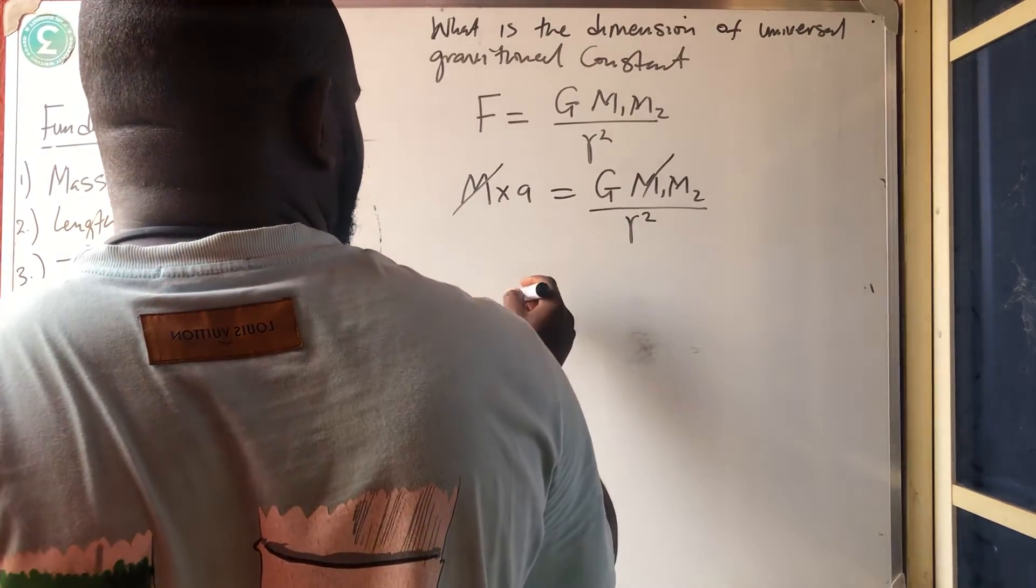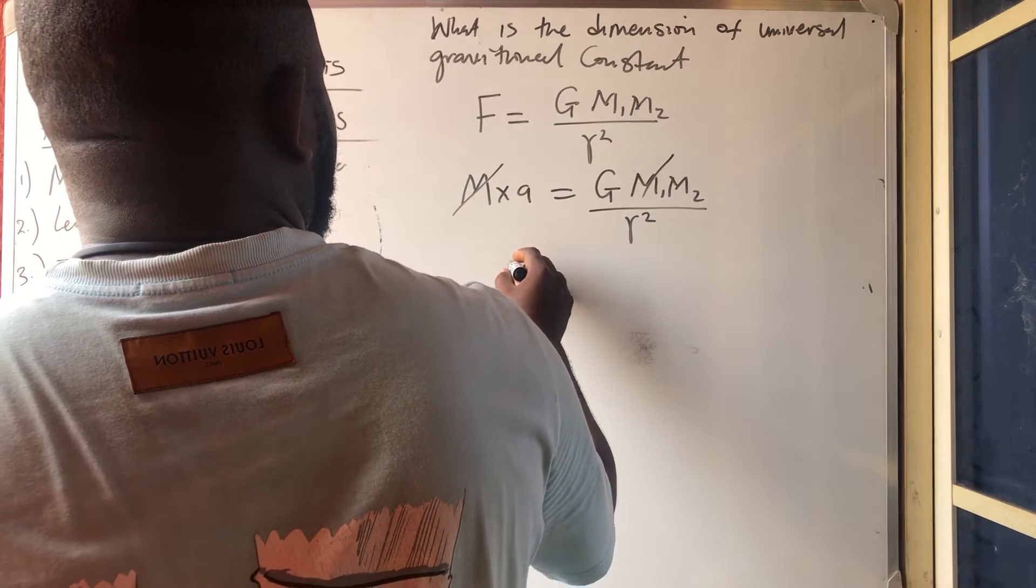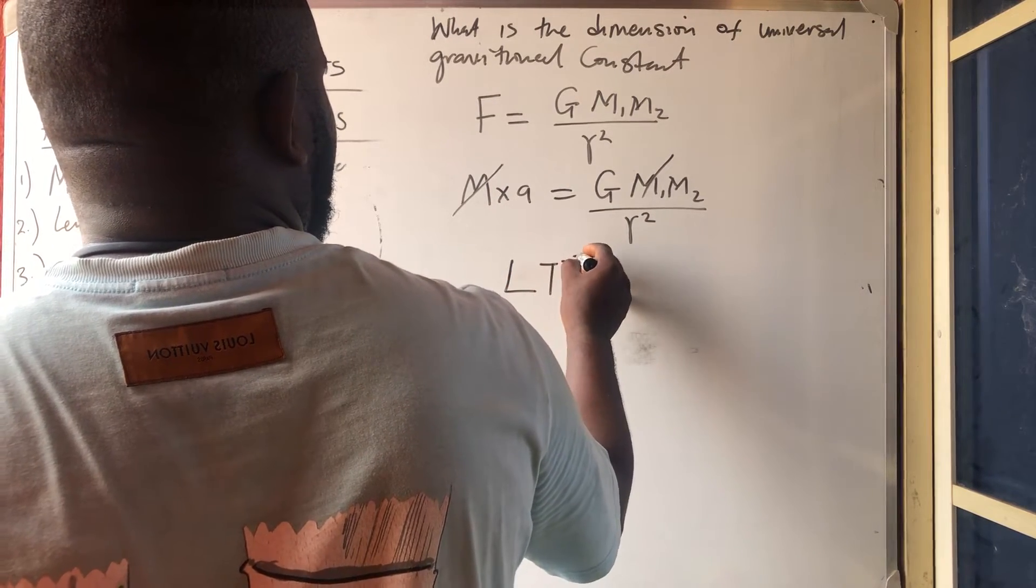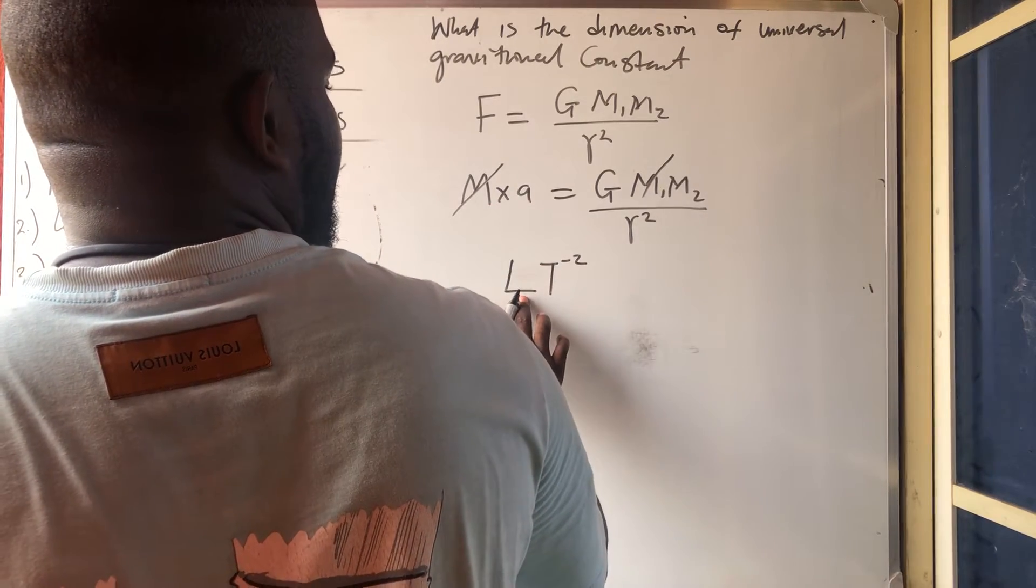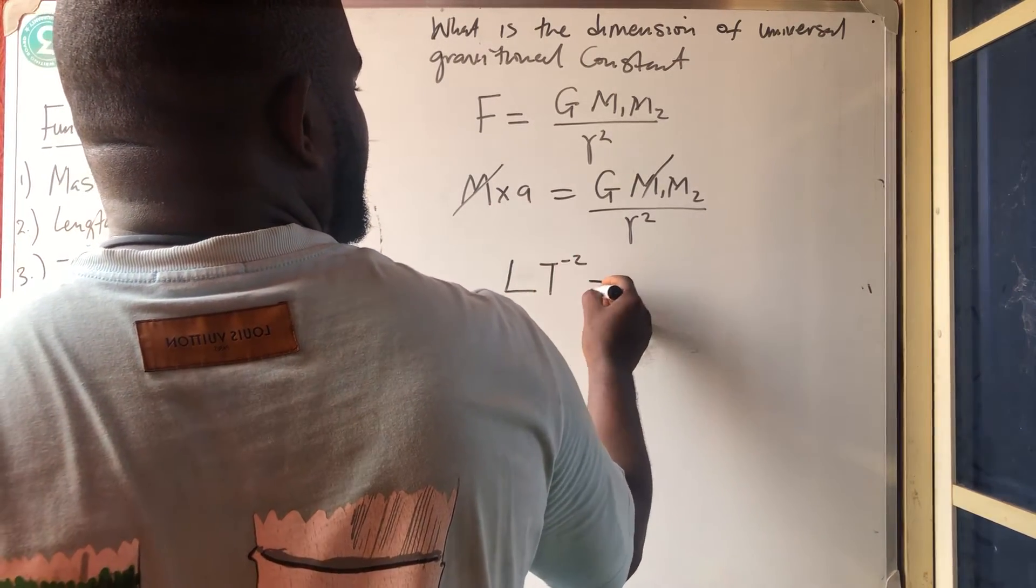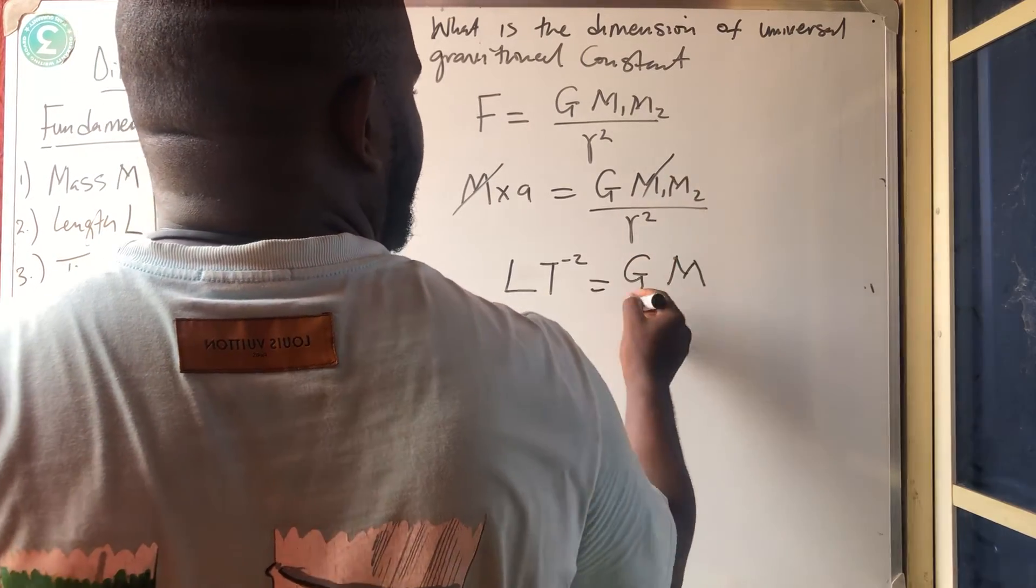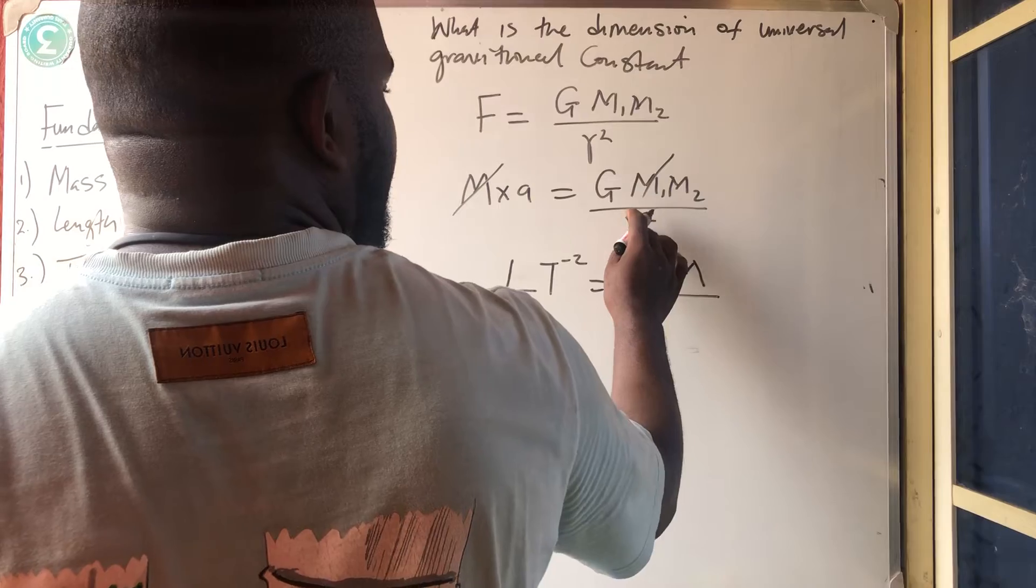Acceleration is meter per second. Acceleration is what? Meter. Meter is L per second T minus per second squared. Acceleration is L T minus 2, which is equal to what? G, M, mass is M, all over, radius, R squared. R is measured in meters.